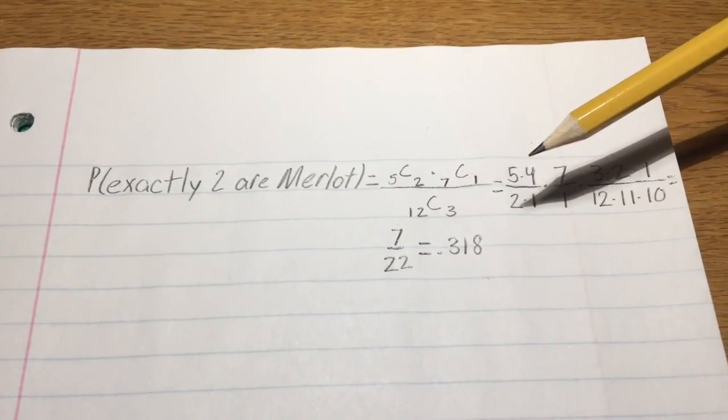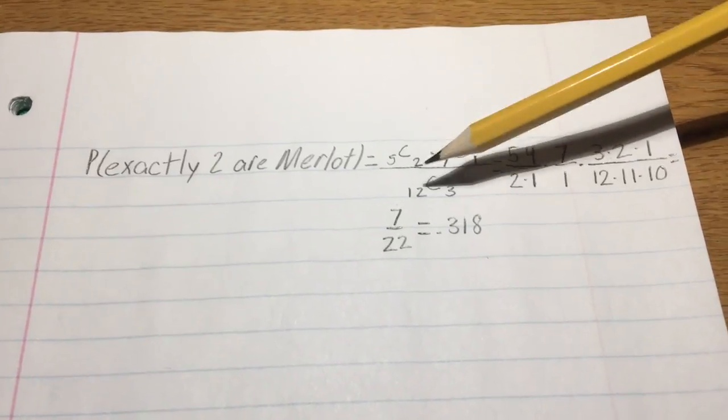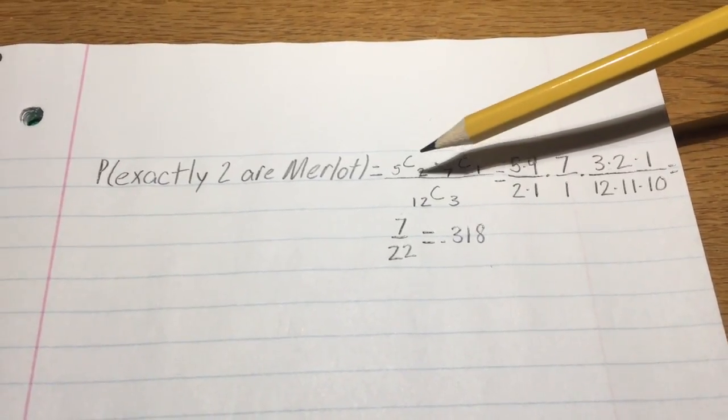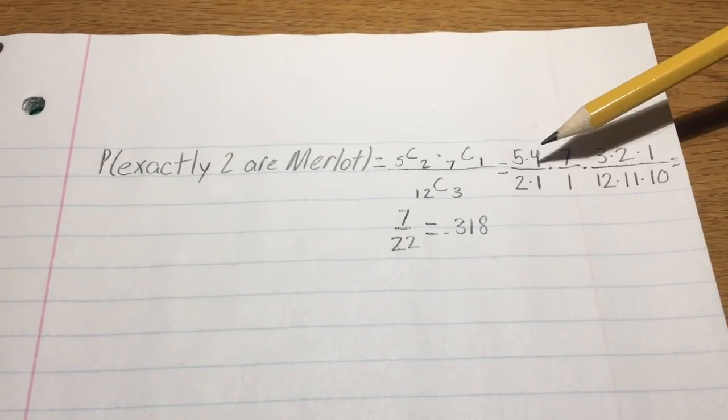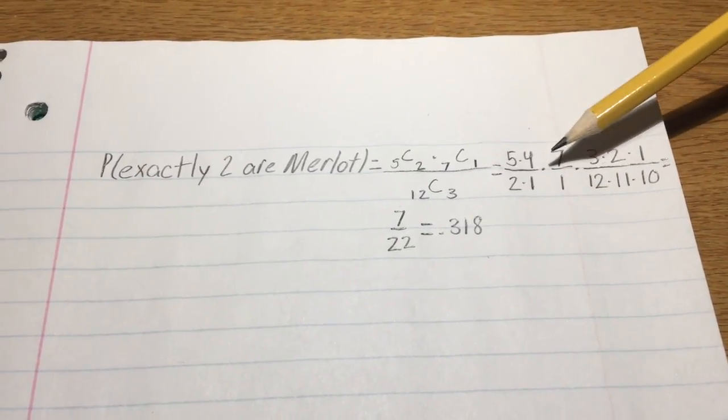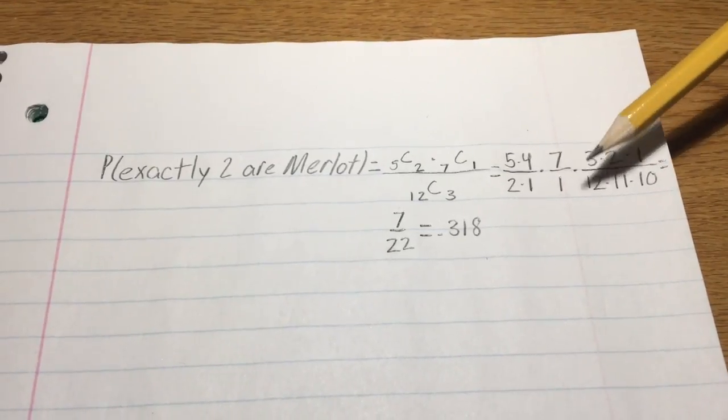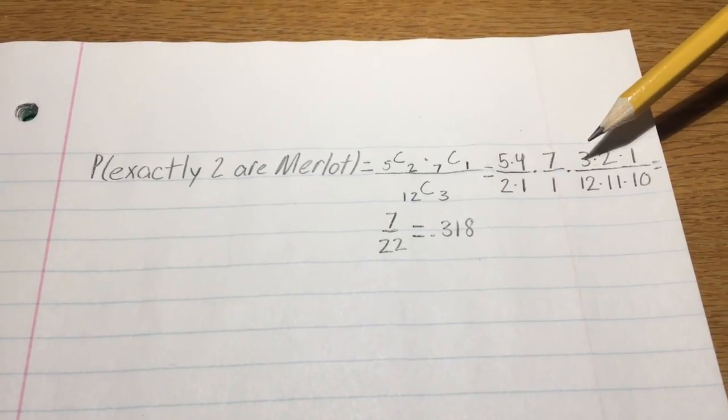Now, once we equate the permutation, this means that the permutation of two Merlot being selected from the five would come out to five times four over two times one, multiplied by the permutation of seven over one.